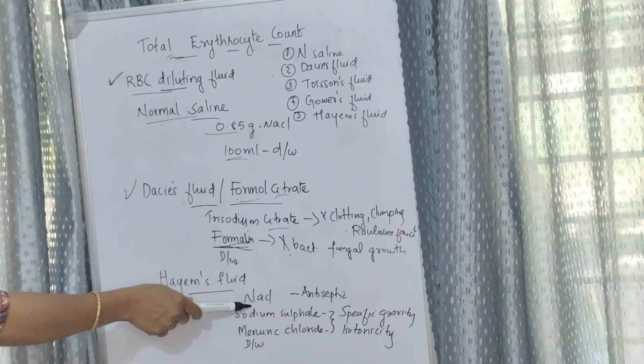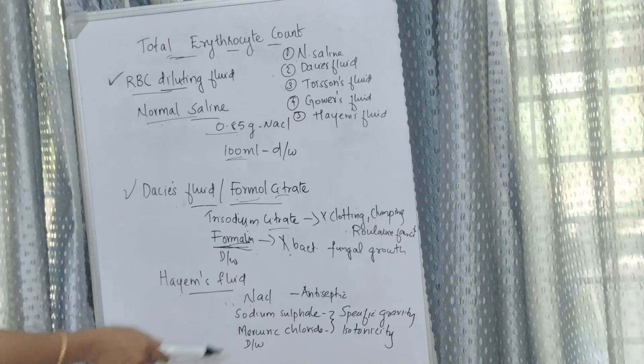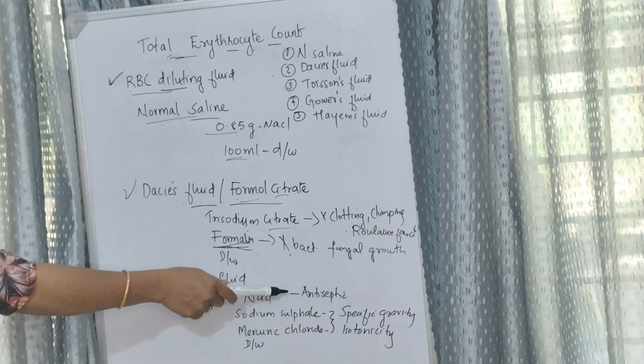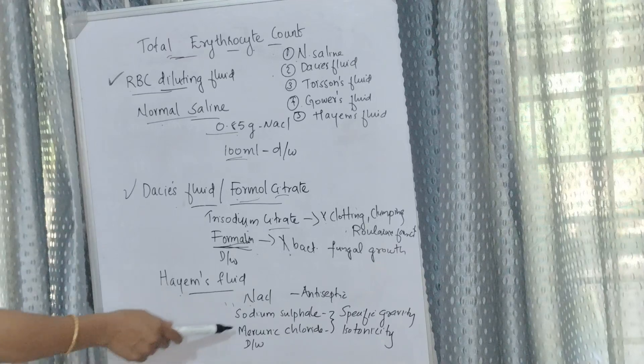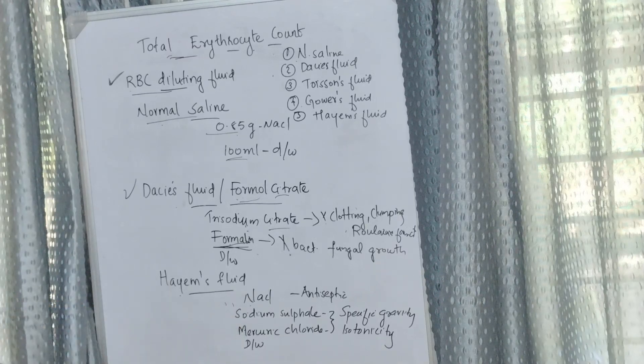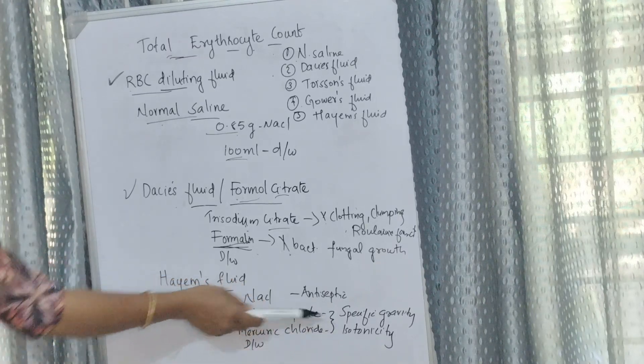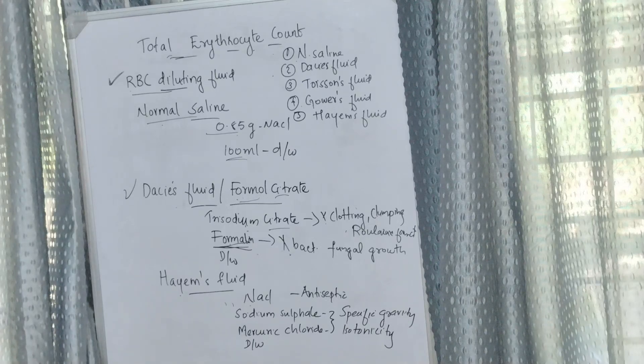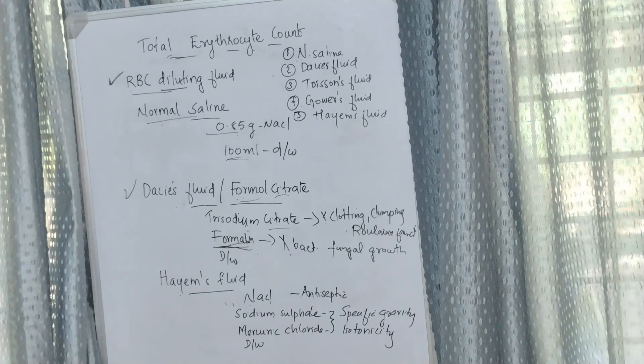Hayem's fluid: In Hayem's fluid, sodium chloride, sodium sulfate, mercury chloride are the contents. Sodium chloride acts as antiseptic while sodium sulfate and mercury chloride provide specific gravity and isotonicity.